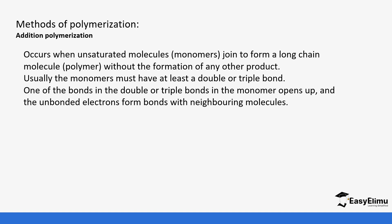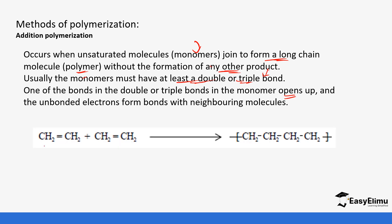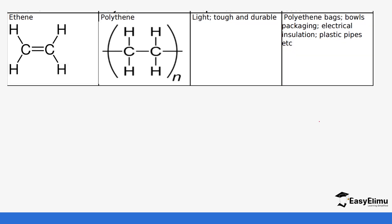Addition polymerization occurs when unsaturated molecules or monomers join together to form a long-chain molecule or polymer without the formation of any other products. The monomers must have at least a double bond or a triple bond. The double bond or triple bond opens up and the electrons bond with the neighboring monomer's electrons. For example, this is an ethene monomer — when they combine, the double bond is removed and they combine to form polyethene, commonly known as polythene.